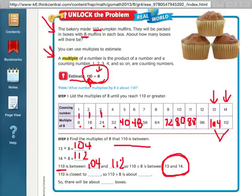Now, the next step here says, well, it's closer to the 112 than it is to the 104. So 110 is closest to 112. So 110 is about 14. 110 divided by 8 is about 14. So there will be about 14 boxes of muffins.